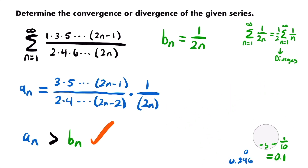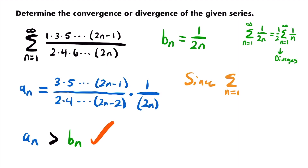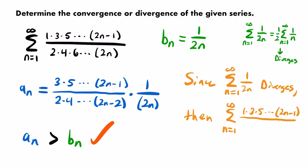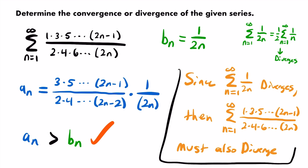Since we've shown that a sub n is greater than b sub n in the long term, and since the sum from n equals 1 to infinity of 1 divided by 2n diverges, the original series — the sum of the product of odd numbers divided by the product of even numbers — must also diverge by the direct comparison test. This series is a divergent series.